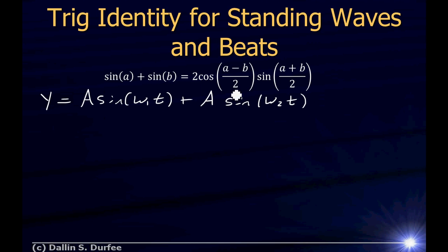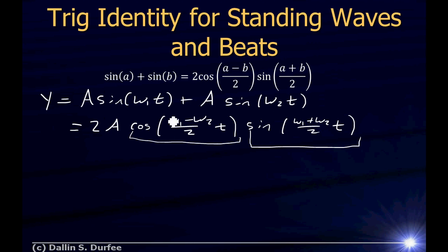When I apply this trig identity, I find this is equal to 2A cos[(ω₁ - ω₂)/2 × t] sin[(ω₁ + ω₂)/2 × t]. If we look at this, this right here is just a sine wave oscillating at the average frequency. This right here though, if the two frequencies are nearly the same, this cosine is going to oscillate at a very small frequency.